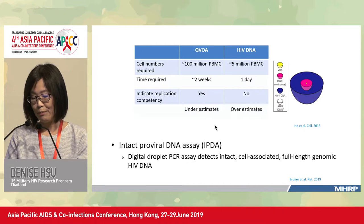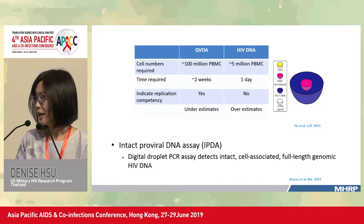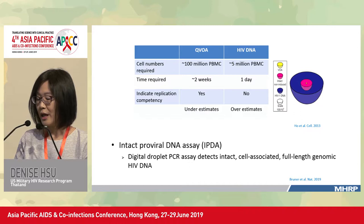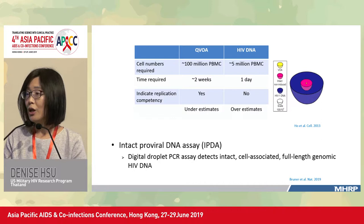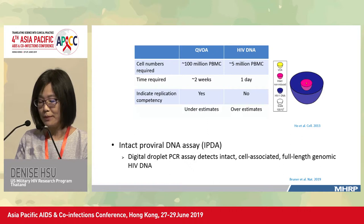More recently, published in Nature in 2019, is the intact proviral DNA assay. There is a lot of interest in this assay because it is a droplet digital PCR assay that detects intact cell-associated full-length genomic HIV DNA. It can differentiate deleted and hypermutated proviruses from intact proviruses using two amplicons and a hypermutation discrimination probe. This is a very promising method to quantify the latent reservoir.